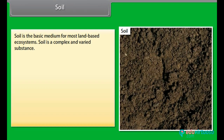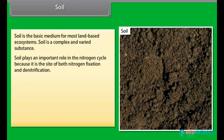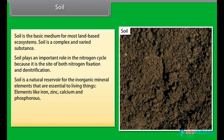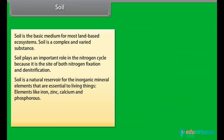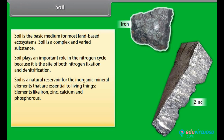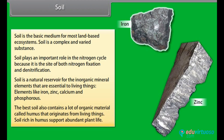Soil: Soil is the basic medium for most land-based ecosystems. Soil is a complex and varied substance. It plays an important role in the nitrogen cycle because it is the site of both nitrogen fixation and denitrification. Soil is a natural reservoir for inorganic mineral elements essential to living things, such as iron, zinc, calcium, and phosphorus. The best soil also contains a lot of organic material called humus, which originates from living things.